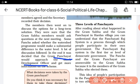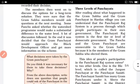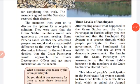The next topic is three levels of Panjait Raj. After reading about what happened in the Gram Sabha and the Gram Panjait in Haradas village, you can understand that the Panjait Raj system is a process through which people participate in their own government. The Panjait Raj system is the first tier or level of democratic government. The Gram Panjait is answerable to the Gram Sabha because it is the members of the Gram Sabha who elected them.